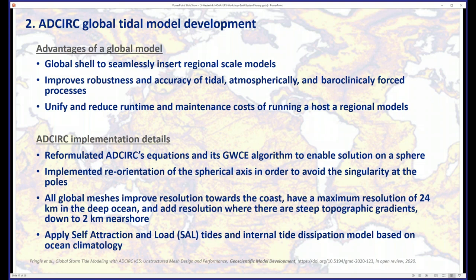Now I'll talk about the global component of this whole system. The global shell allows us to seamlessly insert and integrate in one unstructured mesh the whole world. Those high-resolution meshes are embedded — not nested, but embedded — right in one unified global mesh. You truly are going from 24 to 30-meter resolution in one large mesh, which improves robustness and accuracy. It's also a much better way to maintain models instead of having all these nests that have to talk to each other.